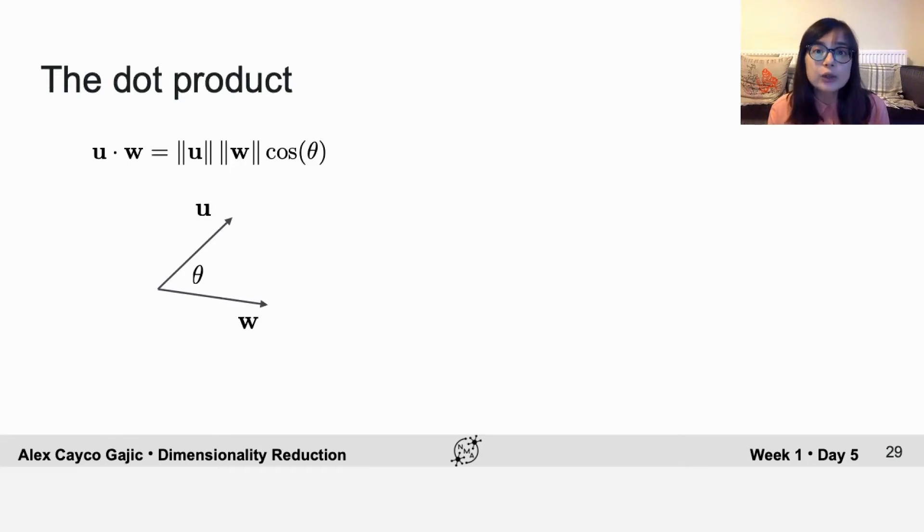So now the question is how do you tell if your two basis vectors are orthogonal to each other? So you can test this using the dot product, which is a scalar quantity. So it's just a number and it's a function of two vectors.